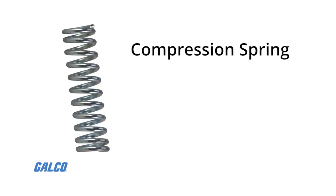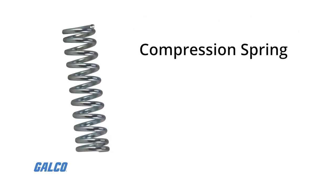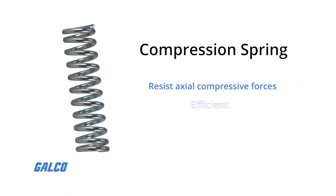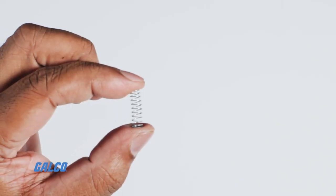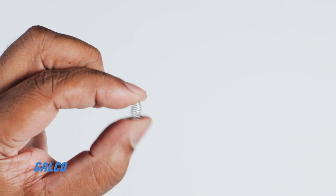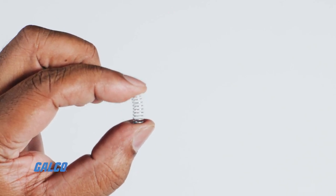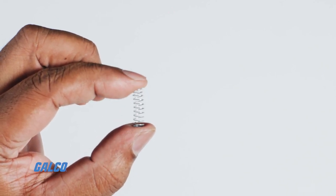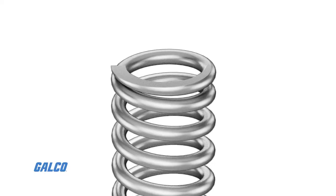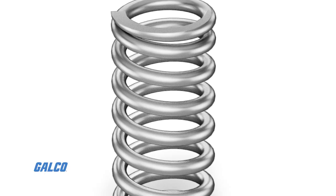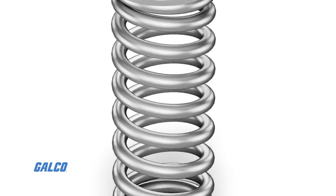The first is the compression spring. These resist axial compressive forces and are one of the most efficient springs when it comes to storing energy. When force is applied to a compression spring, it compresses or shortens and stores energy. As the spring tries to return to its original length, it releases this energy and pushes back against the load.